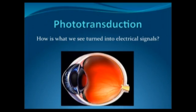My name is Katie Adolphus and I'm a PhD student in psychology at the Human Appetite Research Unit at the University of Leeds. I'm also a physiologist by background, and today I'm going to talk to you about a topic that interested me while I was studying physiology: the anatomy and physiology of the eye, and more specifically the process of phototransduction — how light energy is converted into electrical nerve impulses which are then transmitted to the brain.